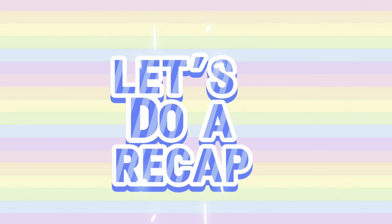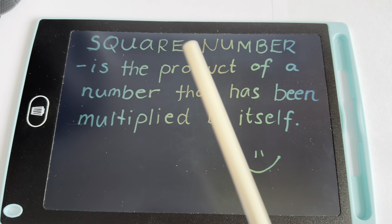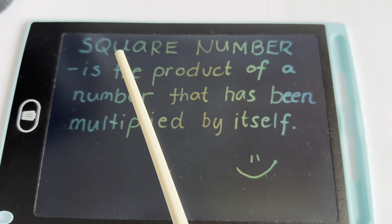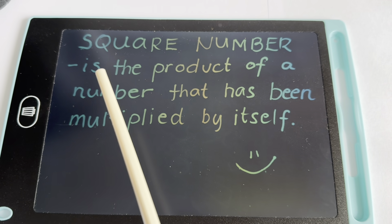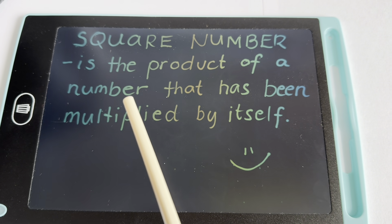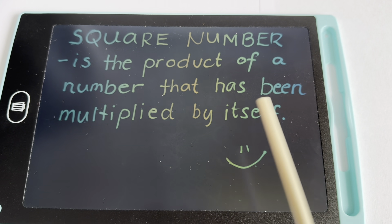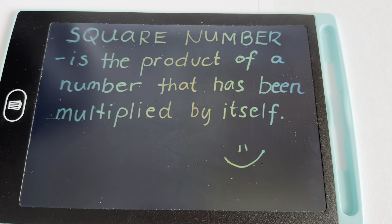Let's do a recap. A square number is the product of a number that has been multiplied by itself.